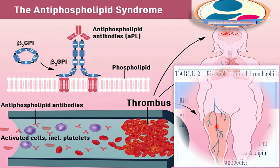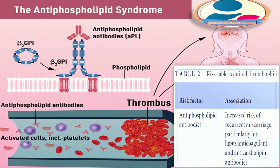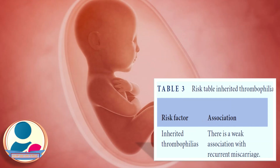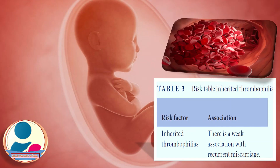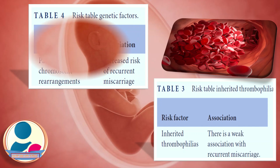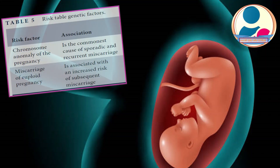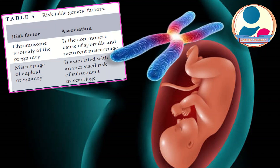Table 2 in the guideline covers antiphospholipid antibodies, noting increased risk of recurrent miscarriages particularly with lupus anticoagulant and anticardiolipin antibodies. Inherited thrombophilias have a weak association. Parental chromosome rearrangements carry increased risk, and chromosomal anomaly of the pregnancy is the commonest cause of sporadic and recurrent miscarriage. Miscarriage of a euploid pregnancy is associated with increased risk of subsequent miscarriage.